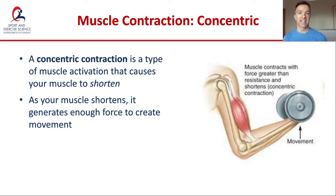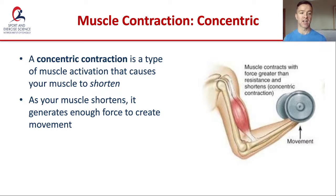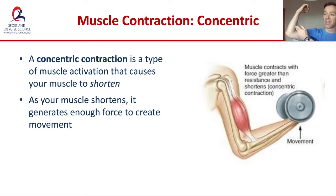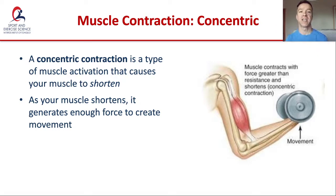While talking about antagonistic pairs, we'll also cover different types of muscle contraction. There are three basic types: concentric, eccentric, and isometric. A concentric contraction is a type of muscle activation that causes your muscle to shorten. As the muscle shortens, it generates enough force to create movement. In the example of the bicep curl, as the bicep contracts this is a concentric contraction — the bicep shortens, pulls on the bones of the forearm, and creates flexion at the elbow.